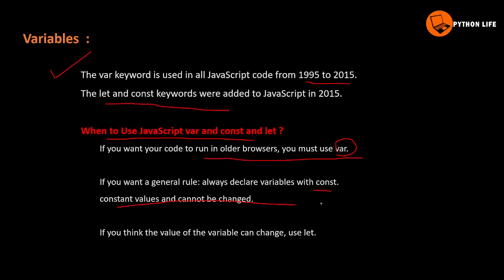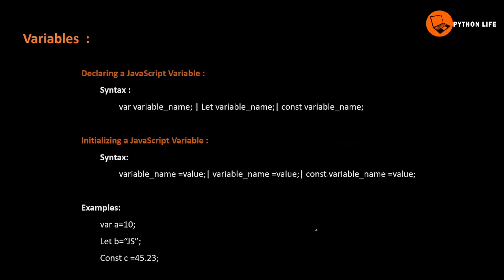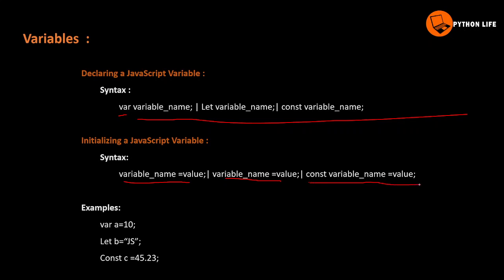The var keyword and let keyword work similarly, but var is the older syntax. The JavaScript variable declaration syntax is: var or let or const, then the data type and variable name, then equals value. For example: var a equal to 10, b equal to JS, const c equal to 45.23.